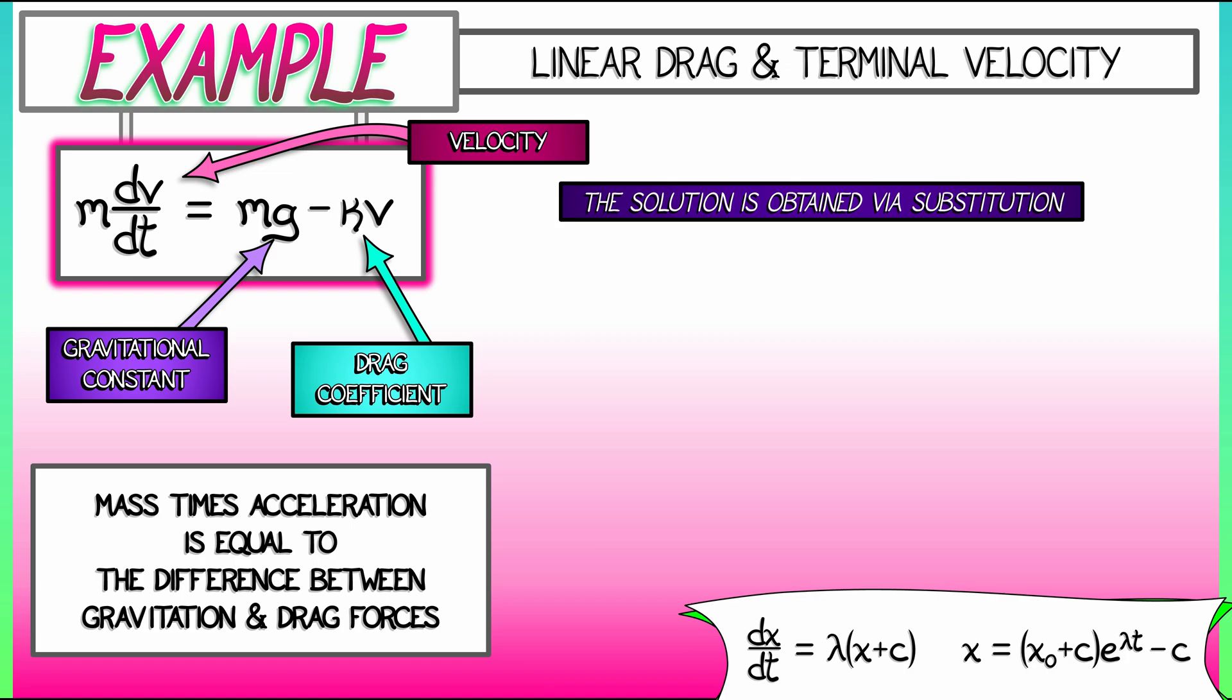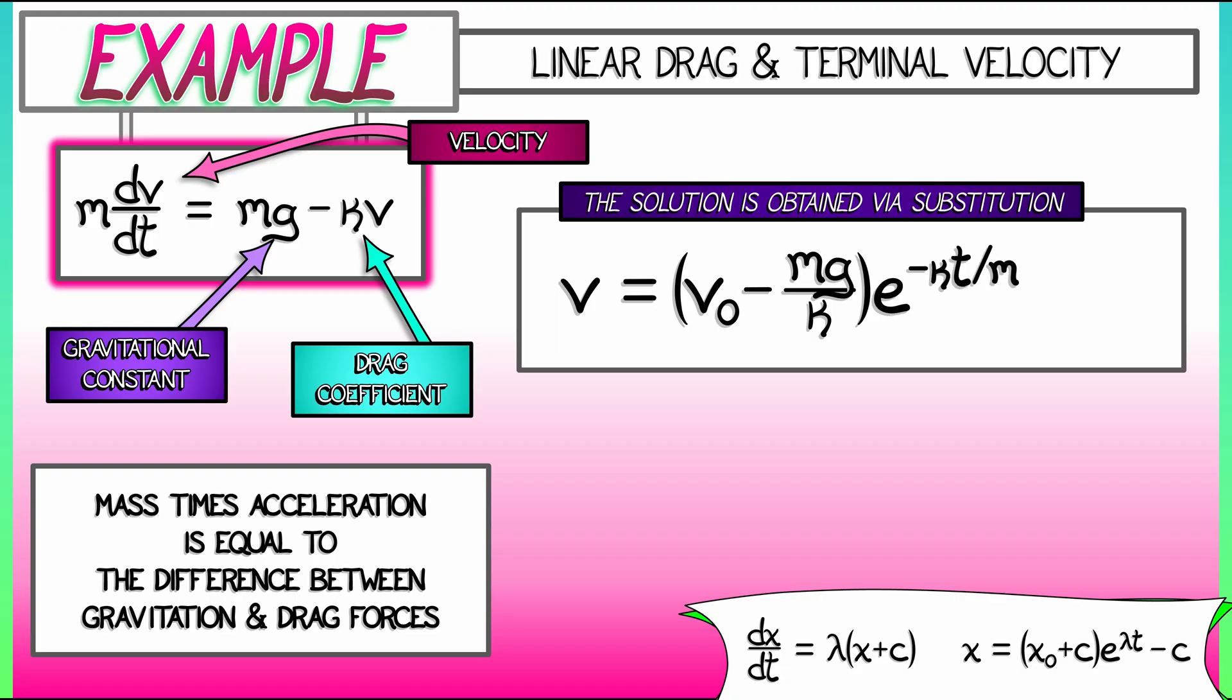Now that takes a little bit of work. I'm going to leave that to you to figure out what is the lambda, what is the c. What we get in the end when we match that up is that the velocity v as a function of t is equal to quantity v_0, the initial velocity, minus mg over kappa, all times e to the minus kappa t divided by m. Then we add to that mg divided by kappa. That's the solution. Does it check out?